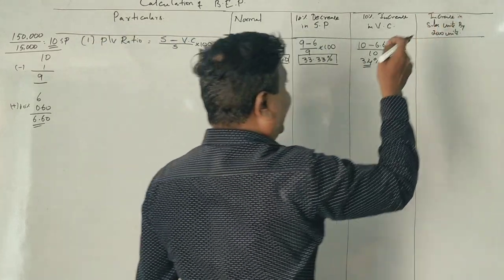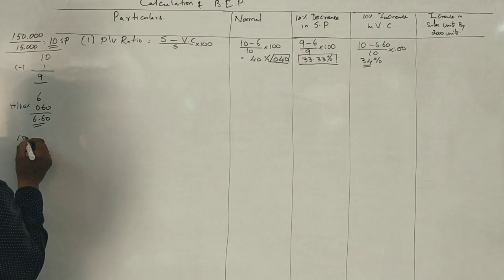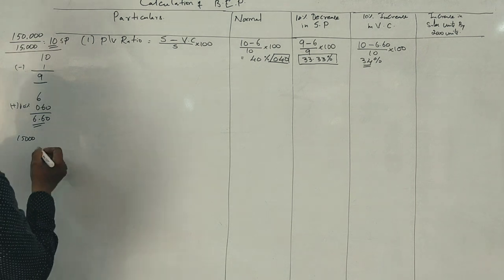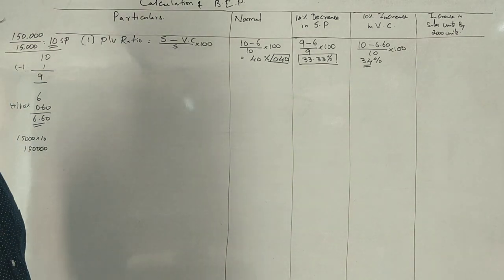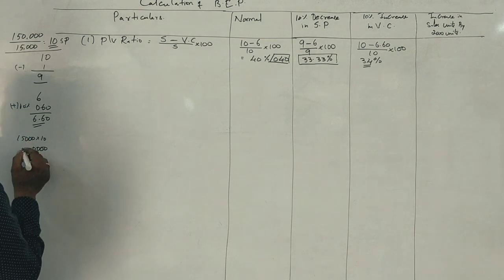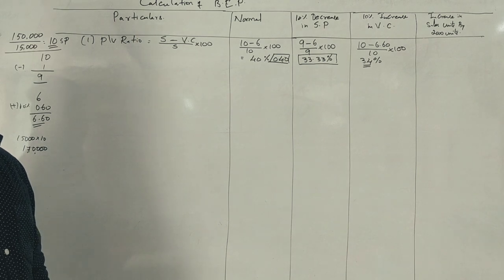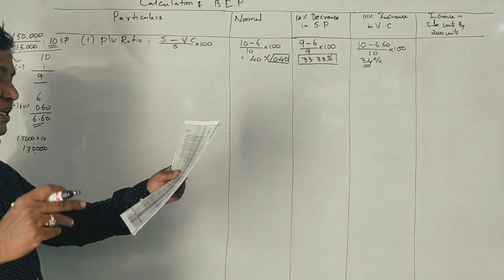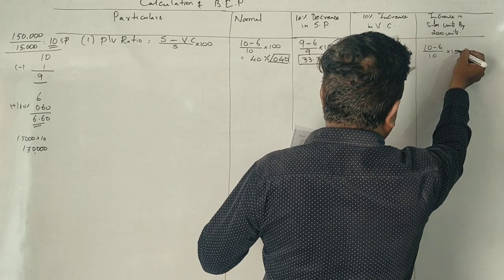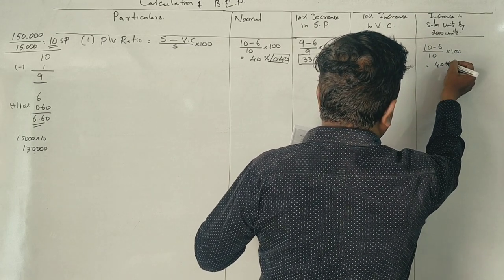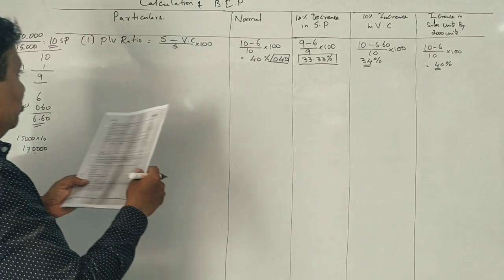This is when sales units increase by 2,000 units. If you sell 17,000 units, then sales become 1,70,000. The selling price remains 10 rupees, variable cost remains 6 rupees. So, 10 minus 6 divided by 10 into 100. The PV ratio is 40%.